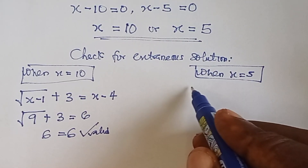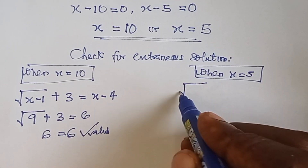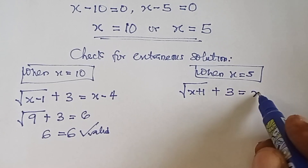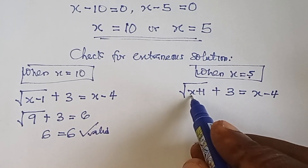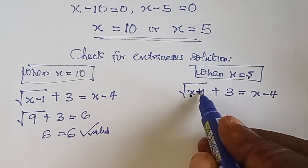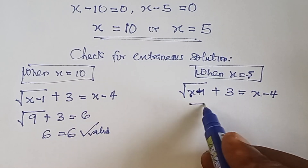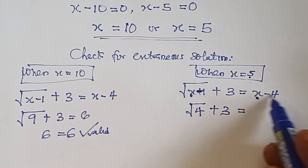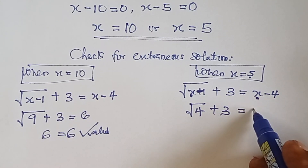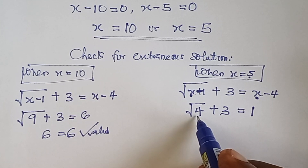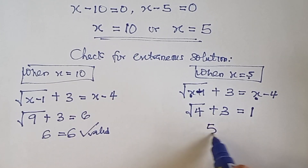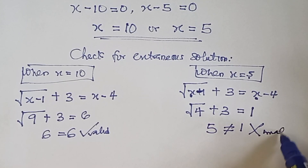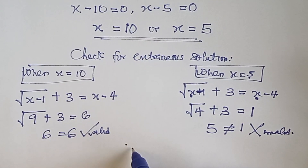When x equals five: square root of five minus one plus three equals five minus four. That gives square root of four plus three equals one. Square root of four is two, so two plus three is five, but five does not equal one. So x equals five is invalid — it's an extraneous solution.